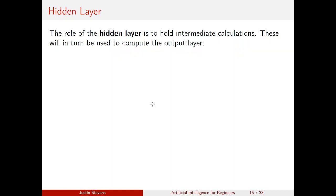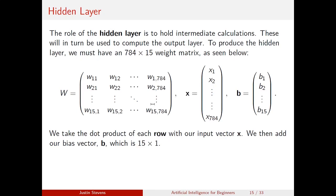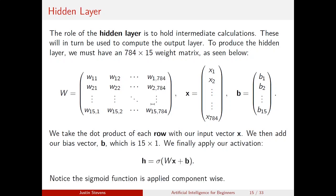To produce the hidden layer, we have a 784 by 15 weight matrix. The weights are numbered w_1,1 through w_1,784 and so on. We take the dot product of each row with our input vector, then add our bias vector b which is 15 by 1. The final step is applying our activation function, so the hidden layer is sigma(Wx + b). When applying a function to a vector, we apply it component-wise.